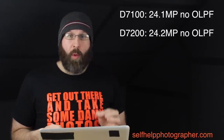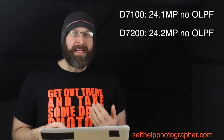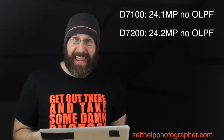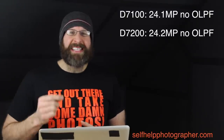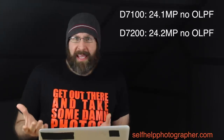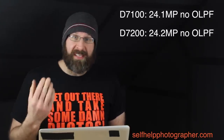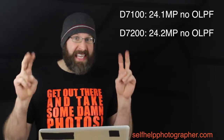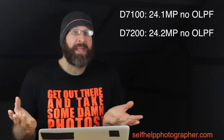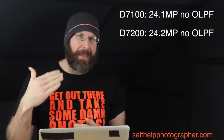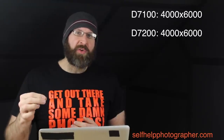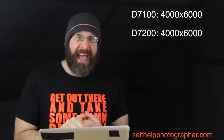First I want to give you a comparison of the D7100 and the new D7200. They are using a sensor that is almost the exact same size — the D7100 has a 24.1 megapixel sensor without an optical low-pass filter, also called an anti-aliasing filter. The D7200 is nearly identical at 24.2 megapixels, so it's probably a slightly different sensor, but the images you get from the D7200 will be the exact same size as from the D7100.